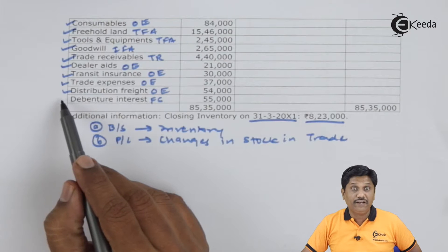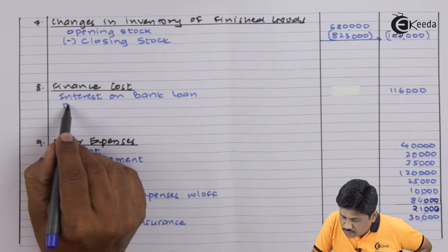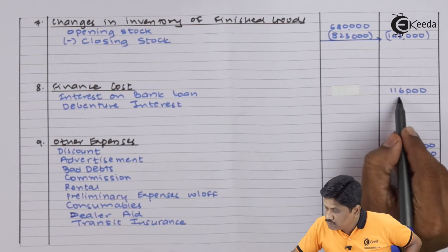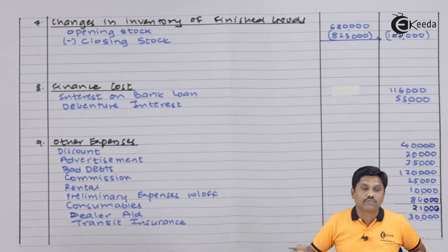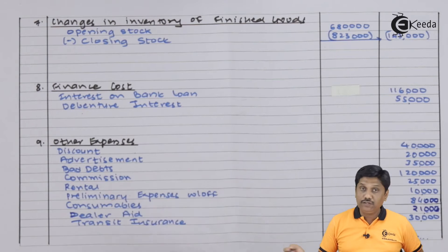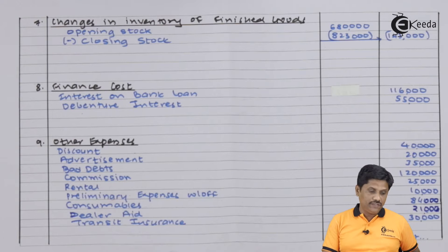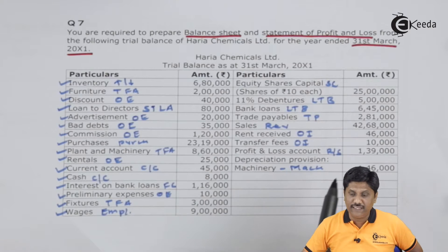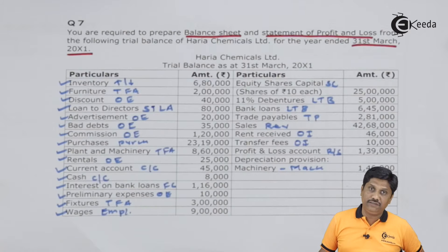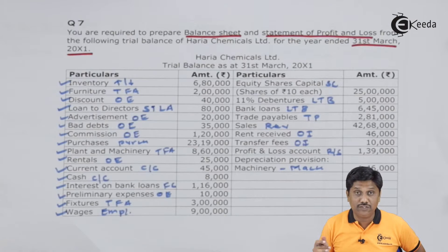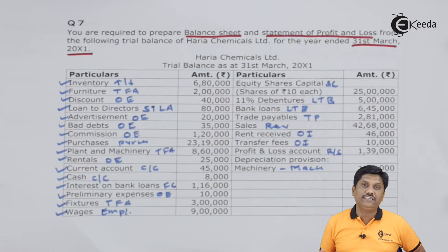Distribution freight of 54,000 will be recorded as other expense. Next is debenture interest — I will record this as a finance cost. While writing debenture interest, I will ensure it is in correlation with the debenture amount. Debenture amount is 5 lakhs and rate of interest is 11%, so it comes to 55,000 — and it is exactly the figure given in the question, so it is correct. Since interest amount matches 55,000, there will be no hidden adjustment of outstanding debenture interest.